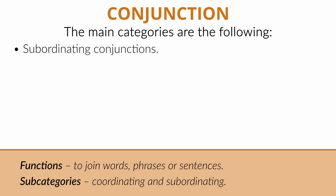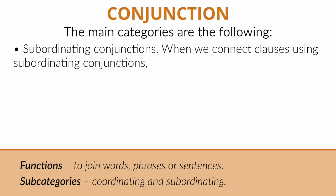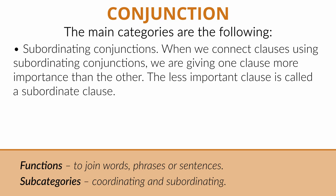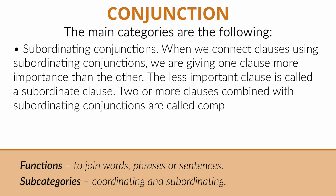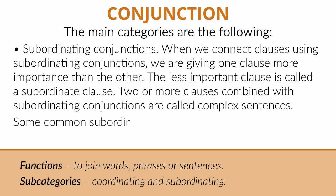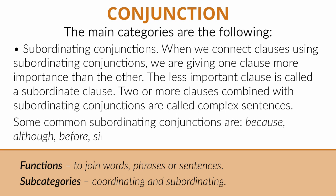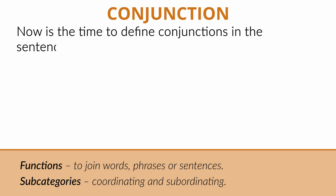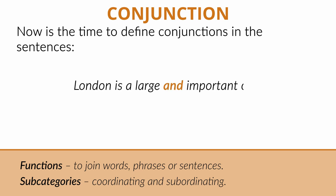Subordinating conjunctions: when we connect clauses using subordinating conjunctions, we are giving one clause more importance than the other. The less important clause is called a subordinate clause. Two or more clauses combined with subordinating conjunctions are called complex sentences. Some common subordinating conjunctions are: because, although, before, since, when, while, and if. Now define the conjunctions in the sentences: 'London is a large and important city.' 'I will call you when I get home.'